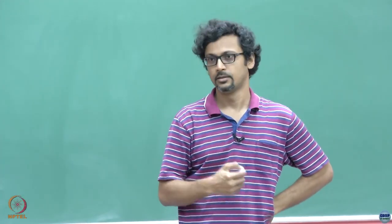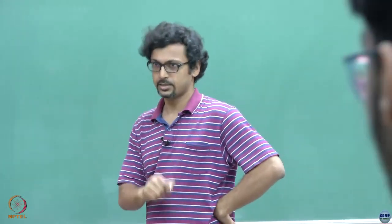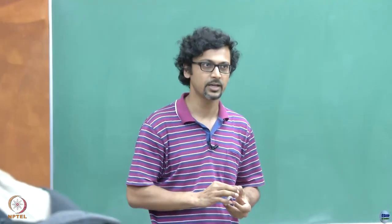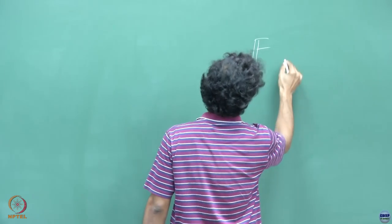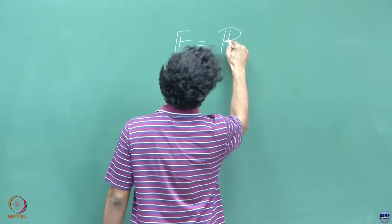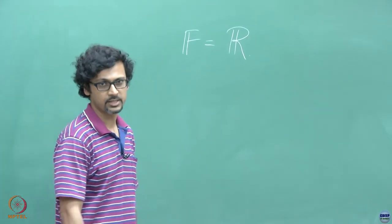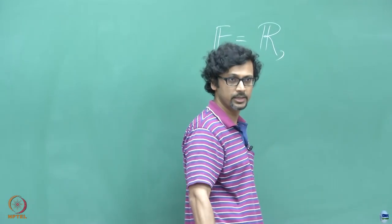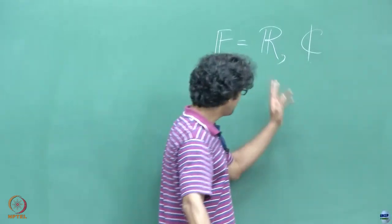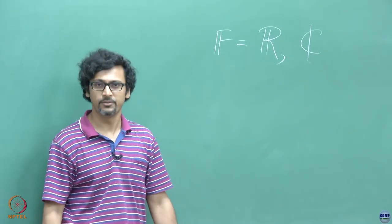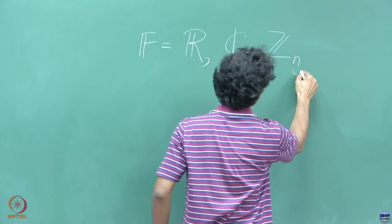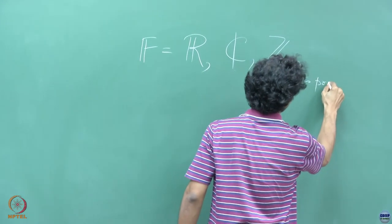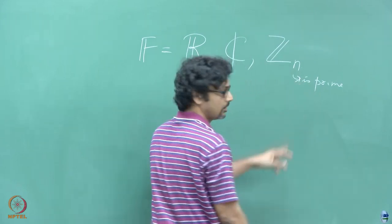In the previous lecture we have seen these structures called fields, and we have seen what sort of properties they must satisfy. Before we move on to other topics, let us give you a couple of quick exercises to think about. We have seen that real numbers satisfy the properties of a field with the usual addition and multiplication. You also have complex numbers. These are both examples of infinite fields. However, you could also have examples of finite fields where N is prime, with the modulo operations.